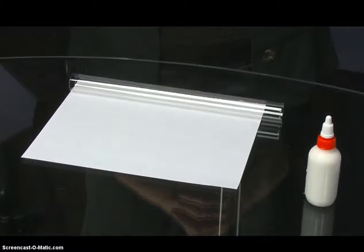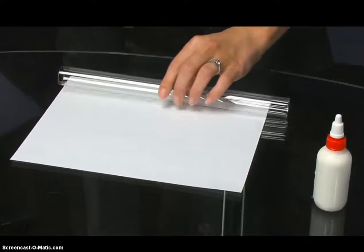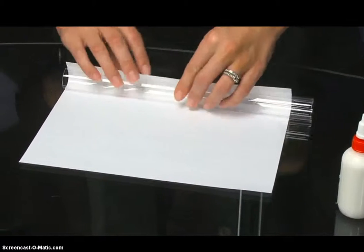To begin, place the plastic tube at one long edge of the typing paper. Roll the paper and tube together so that the paper winds tightly around the tube.